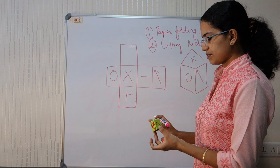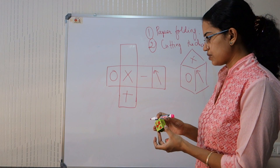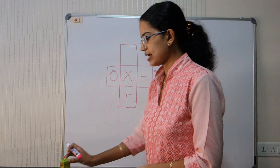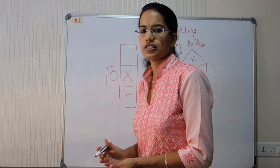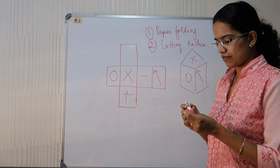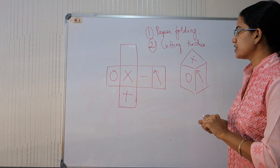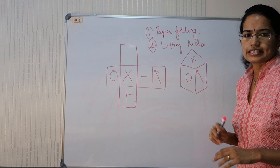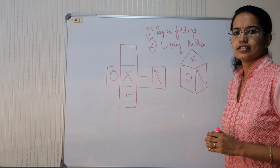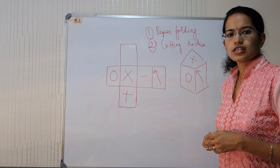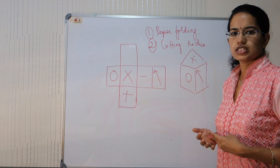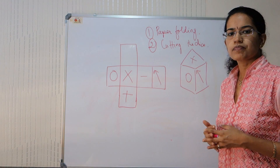This was another experiment we did today — an exercise based on paper folding. With this, we covered the section of dice, and we would be continuing with more sections in reasoning.